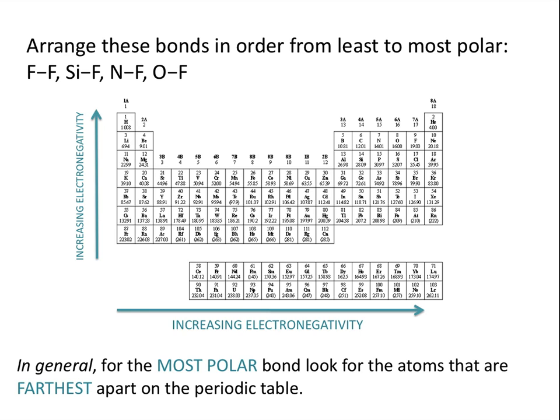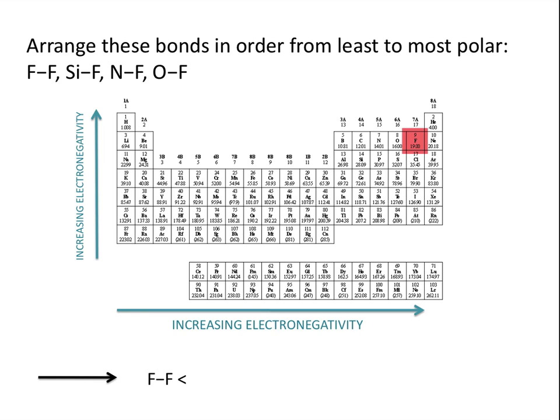In general, for the most polar bond, you're going to look for the atoms that are furthest apart on the periodic table. And the opposite is also true — for the least polar bond, you look for the two elements that are closest together. In this example, the least polar bond is the fluorine-fluorine bond. Whenever you have two atoms of the same element bonded together, the difference in electronegativity will always be zero, so this is a non-polar bond.